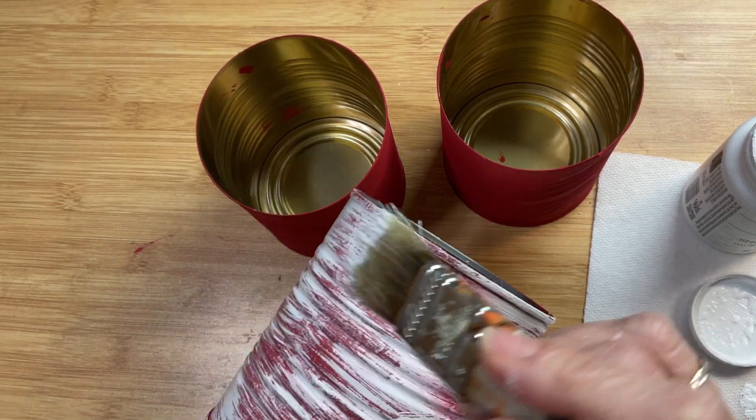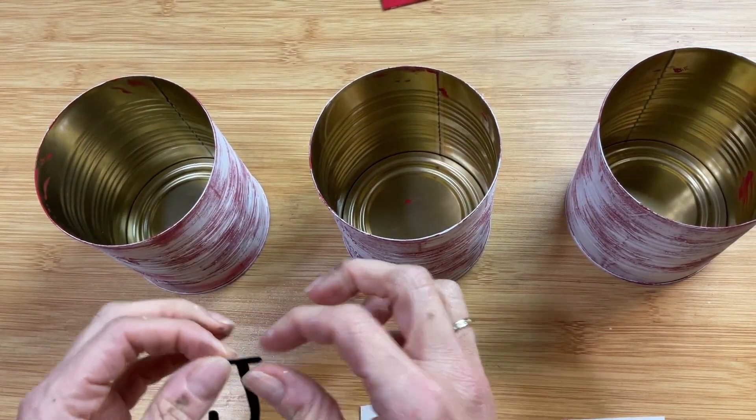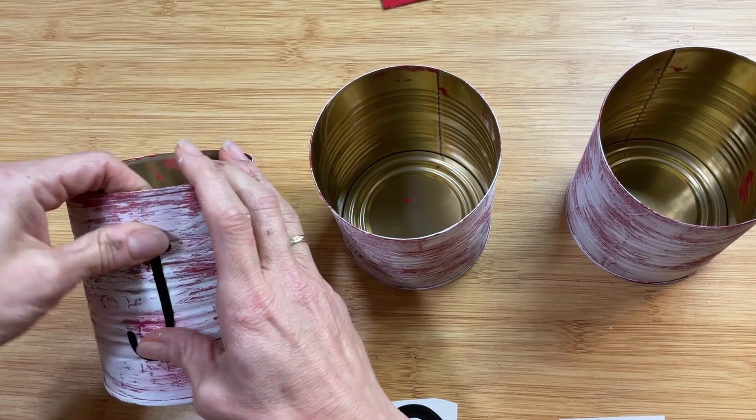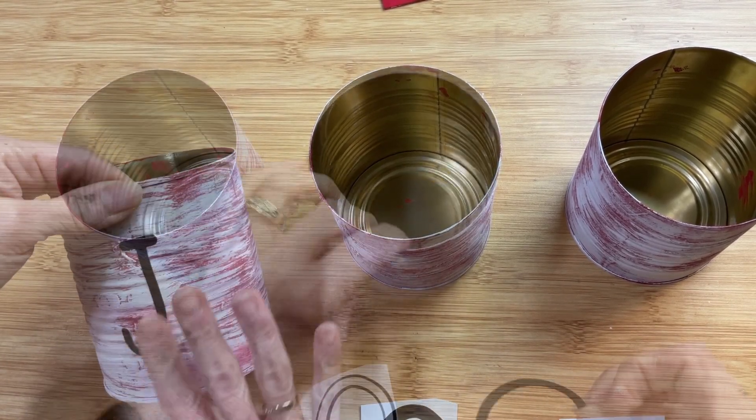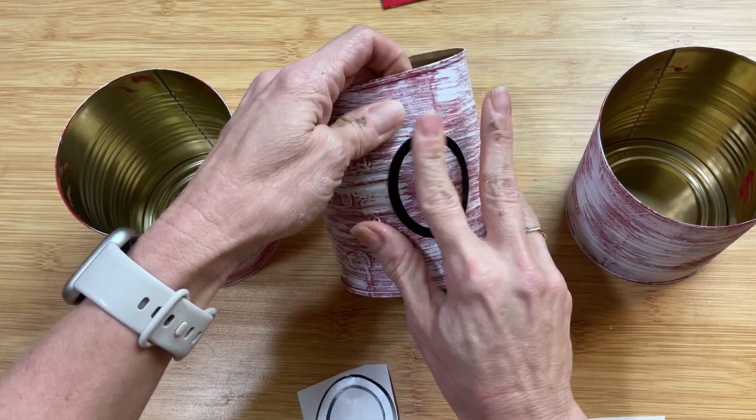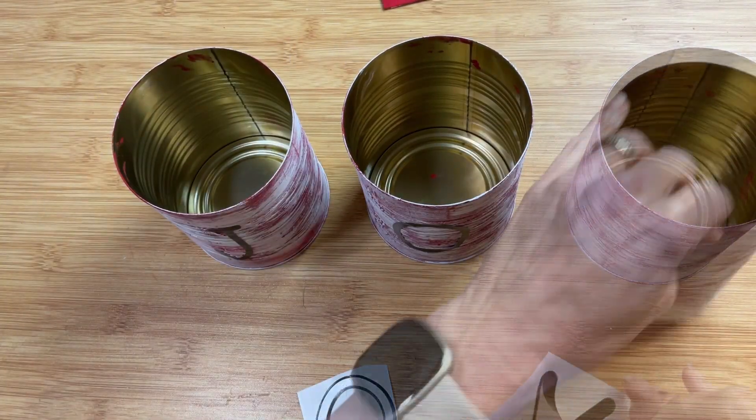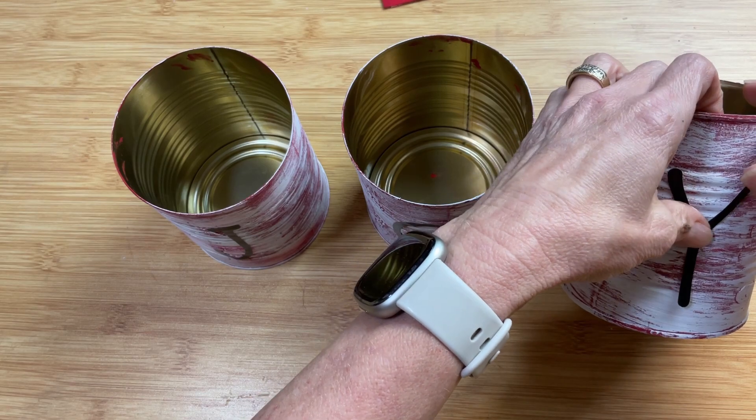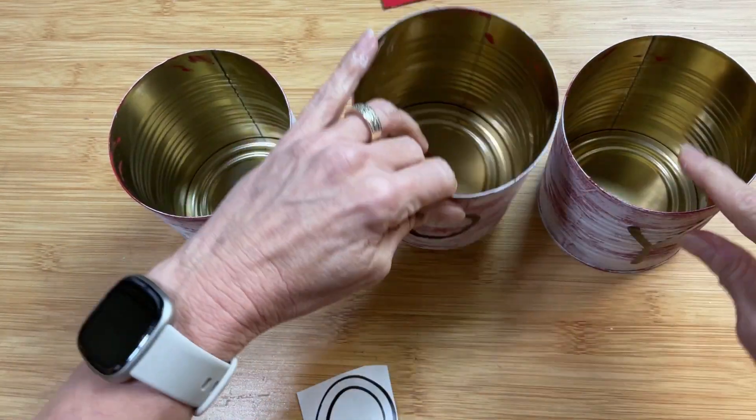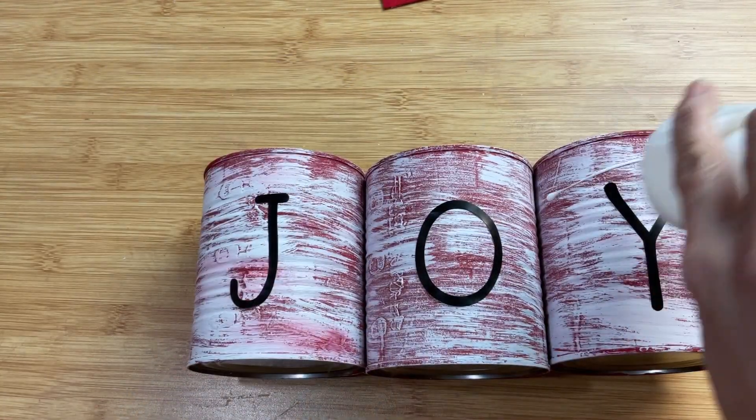Once we get those painted we'll let those dry completely as well then taking some poster sticker letters from Dollar Tree or any other large stickers you have I believe these came from Hobby Lobby in the teaching section. I'm going to put the stickers on my cans to spell out the word joy. Just apply all three of the stickers and then once those are on there I'm going to use a little bit of Mod Podge just over the stickers for right now to make sure that they are sealed down completely.